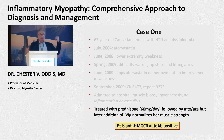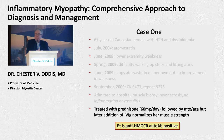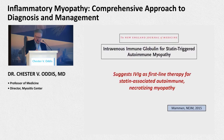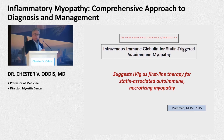When anti-HMGCR autoantibodies became available — the Hopkins group, particularly Andy Mammon and Lisa Christopher-Stein, did elegant work on this antibody — this patient was found to be anti-HMGCR autoantibody positive. Andy has also emphasized that IVIG may be a first-line therapy for patients with necrotizing myopathy associated with these autoantibodies.